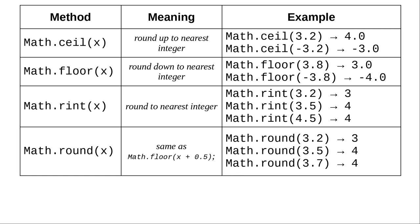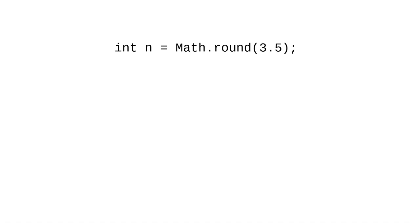The round method returns a long when you give it a double. That means you can't do this. Instead, you have to do a cast to make sure you get an integer.